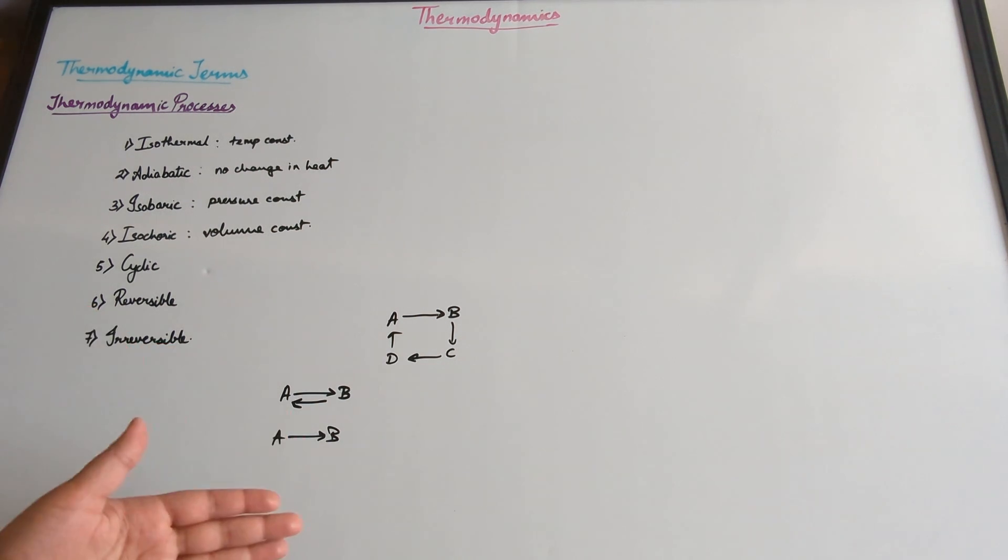Reversible, when A gets converted to B in the system, we can convert it back from B to A by a change in conditions. So that's a reversible one.